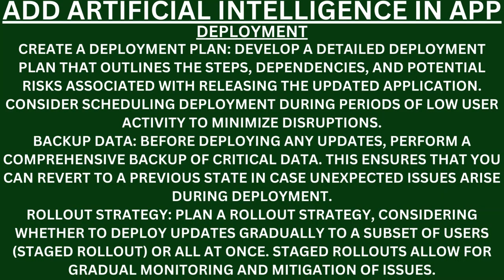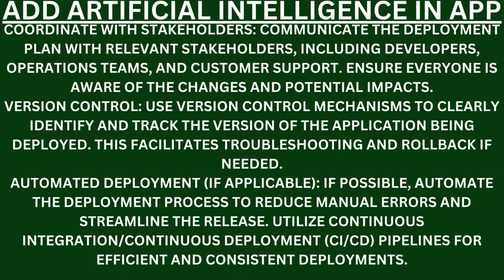Deployment. Create a deployment plan. Develop a detailed deployment plan that outlines the steps, dependencies, and potential risks associated with releasing the updated application. Consider scheduling deployment during periods of low user activity to minimize disruptions. Backup data. Before deploying any updates, perform a comprehensive backup of critical data — this ensures you can revert to a previous state if unexpected issues arise. Rollout strategy. Plan a rollout strategy considering whether to deploy updates gradually to a subset of users (staged rollout) or all at once. Staged rollouts allow for gradual monitoring and mitigation of issues.